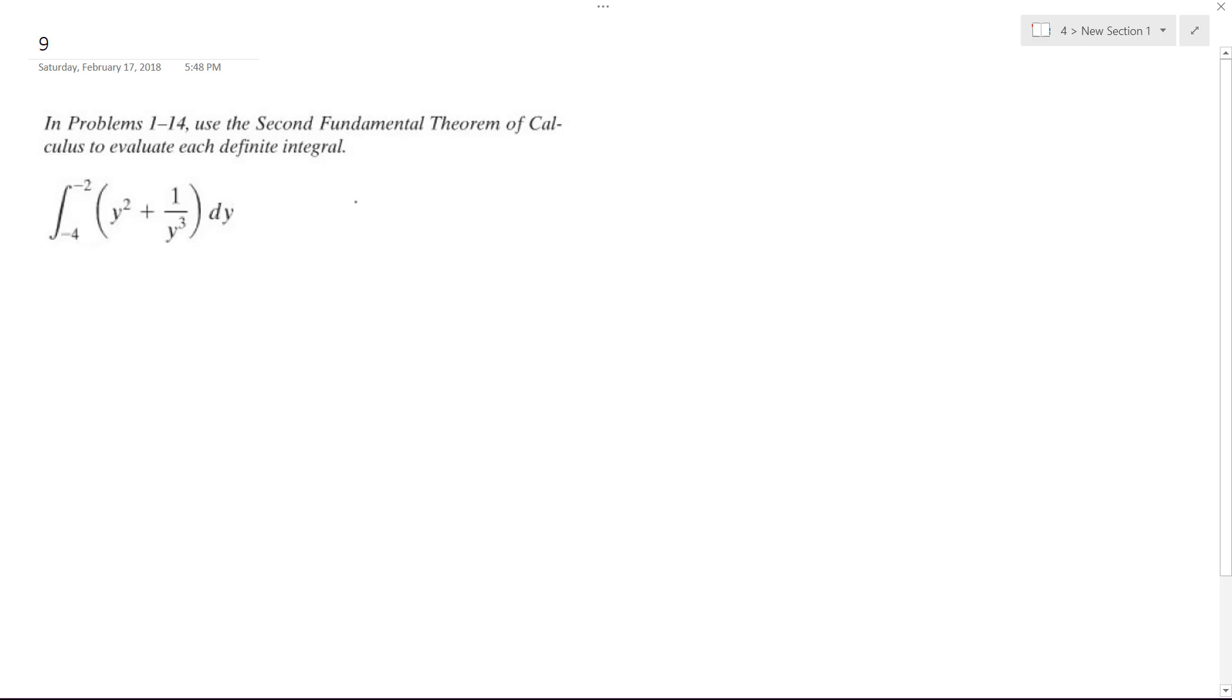First off, integrating y squared plus y to the negative three. This is the equivalent of one over y cubed; it's just easier to do it this way. I get three plus one. So we end up with y cubed over three plus y raised to negative two over negative two, or it just becomes y cubed over three minus y to the negative two over two.